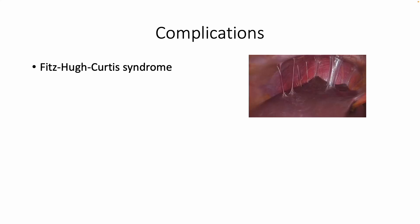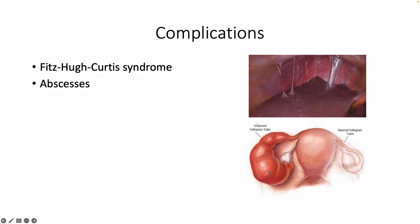Lastly, some of the complications include Fitz-Hugh-Curtis syndrome, which is an inflammation of the hepatic capsule and diaphragm that causes lesions and can result in pleuritic pain. There is also a risk of abscesses such as the tubo-ovarian abscess. Additionally, patients who suffer from Pelvic Inflammatory Disease have the risk of ectopic pregnancies tripled compared to those who have never suffered from it.